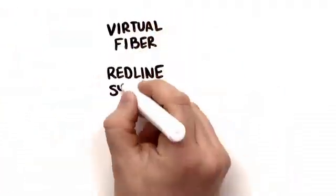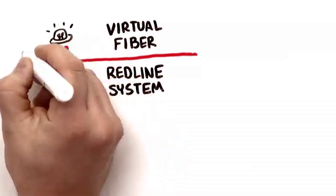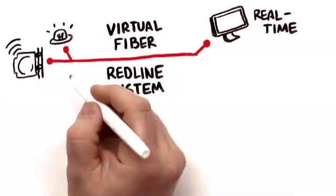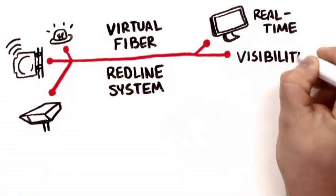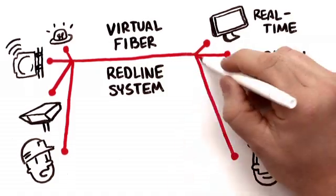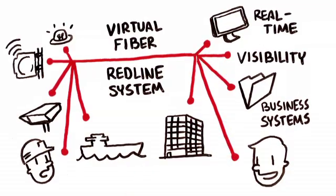On a single virtual fiber Redline system, everyone and everything is connected wirelessly. Sensors and in-field equipment can be monitored and controlled in real time. Video cameras provide visibility into field operations. People anywhere in the field can talk to other people and connect to business systems. Even ships can be connected to network operations centers.